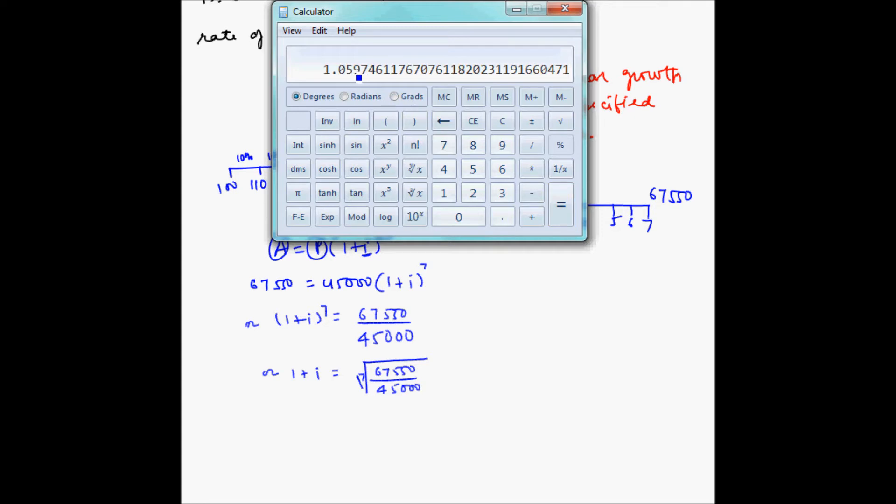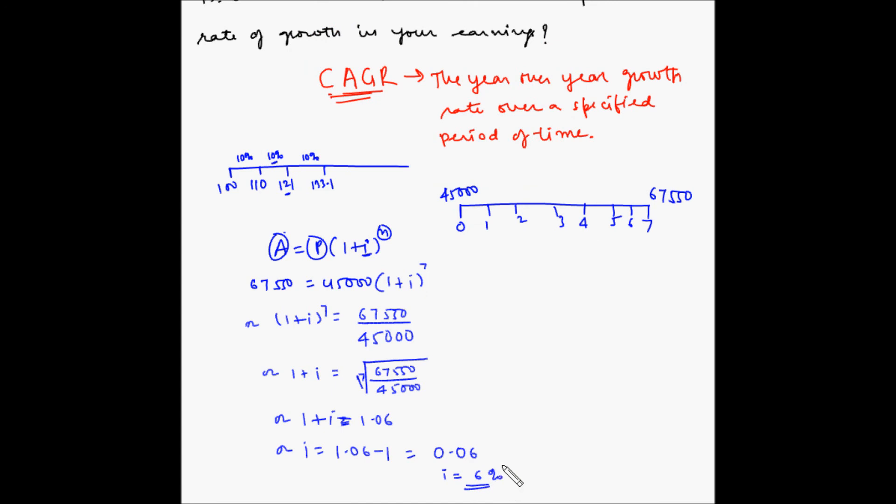So (1 plus I) is equal to 1.06, or I is equal to 1.06 minus 1, this is equal to 0.06. So basically the rate of interest is equal to 6%. So the earning has grown at a compound annual growth rate of 6%.